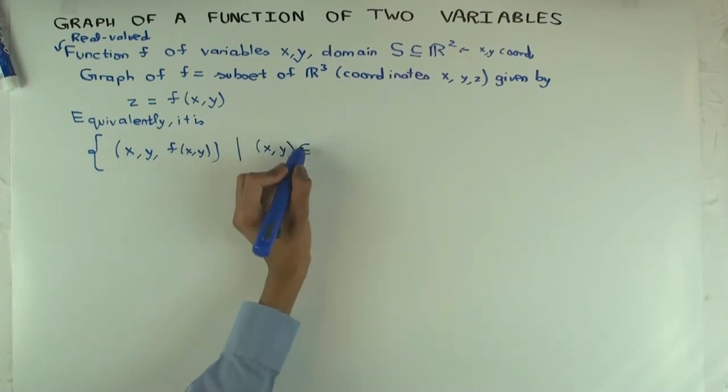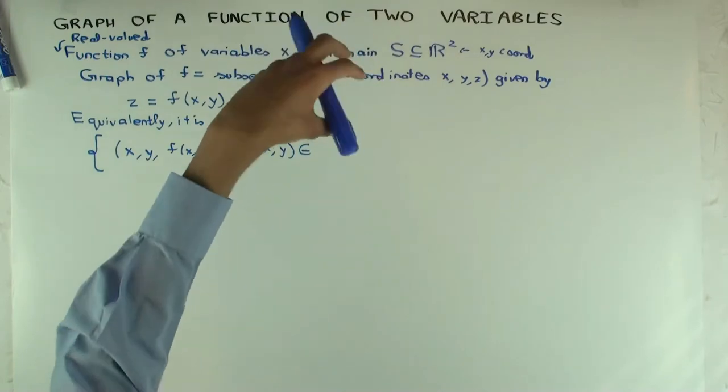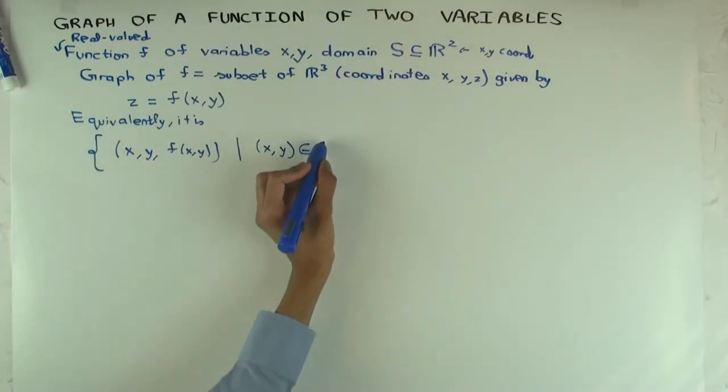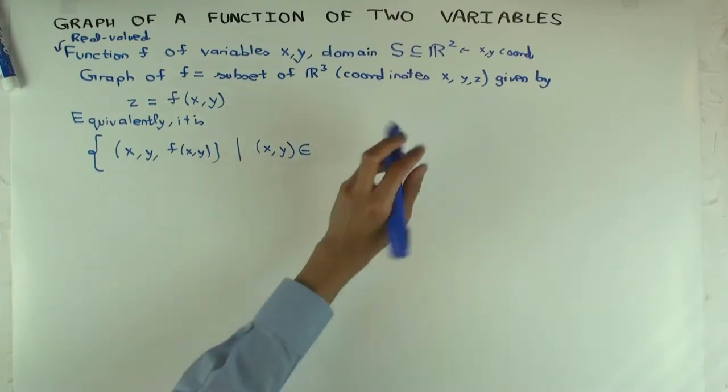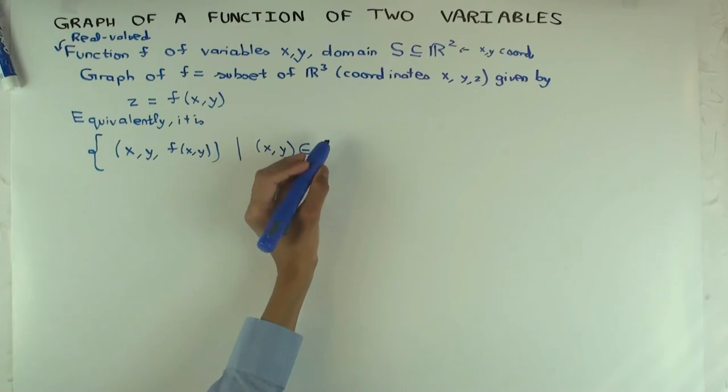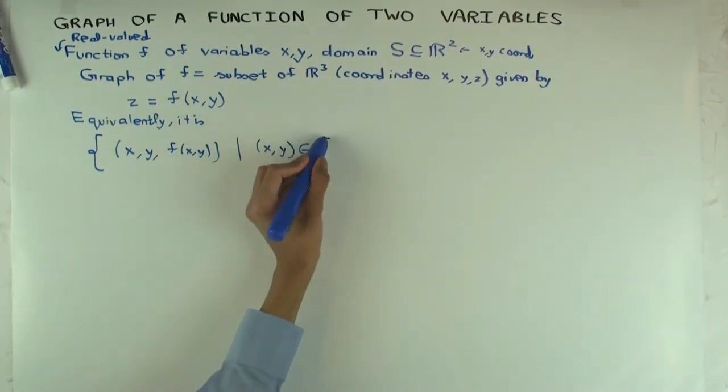Well, (x,y) will live in R², but not everything in R² because we just want to look at the situation where they're in the domain, so (x,y) are in the subset of R² where the function's defined. What letter did I use for that? I already used a letter—oh, S.